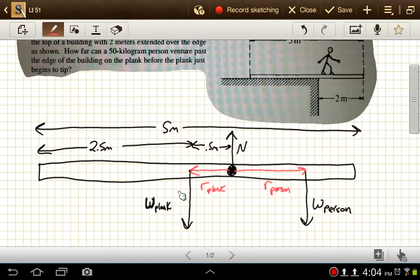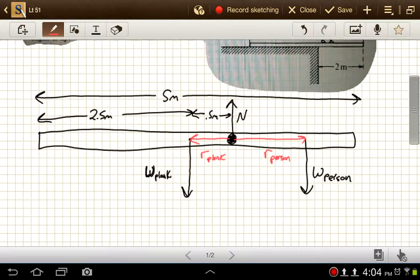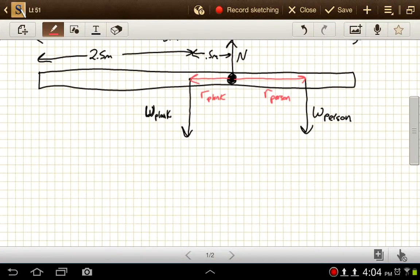So we have a torque going in the counterclockwise direction from this plank's weight, and then a torque going in the clockwise direction from the person's weight. And we want that last point before this torque wins out. So now we can set up our equation. We're going to say the net torque has to be zero. This is the last moment before we start to rotate, before we start to accelerate in this direction.